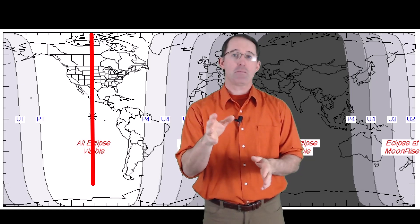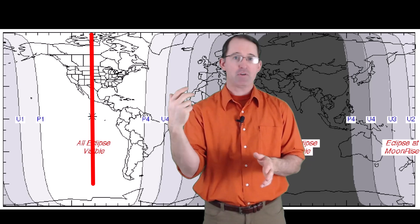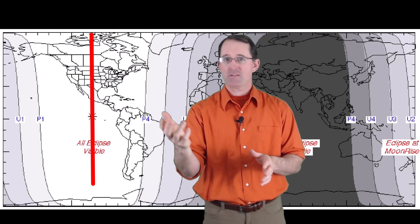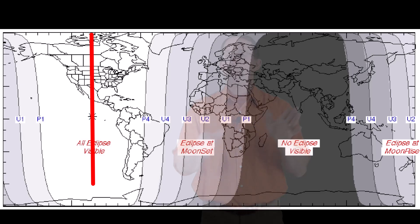Photographers, if your goal is to pair this eclipse with an object in the foreground, some kind of landscape, just know that this may be challenging. But the further east you are of that line, the easier your job will be.